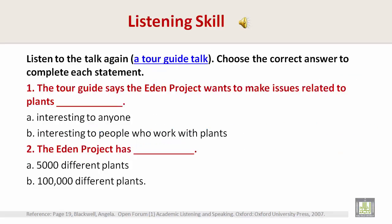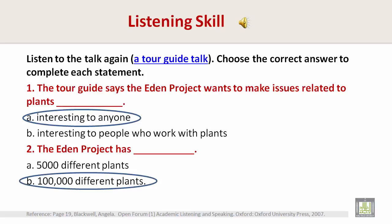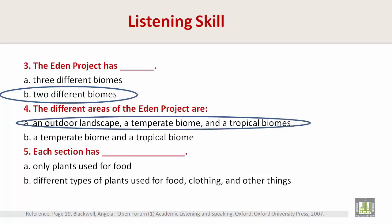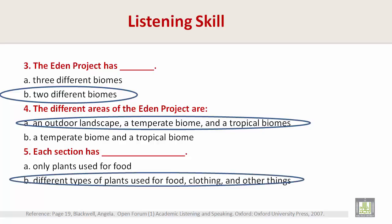Now listen to the talk again. Choose the correct answer to complete each statement — make sure to pause your screen. Number one: The tour guide says the Eden Project wants to make issues related to plants — A. interesting to anyone. Number two: The Eden Project has — B. 100,000 different plants. Number three: The Eden Project has — B. two different biomes. Number four: The different areas of the Eden Project are — A. an outdoor landscape, a temperate biome, and tropical biomes. Number five: Each section has — B. different types of plants used for food, clothing, and other things.